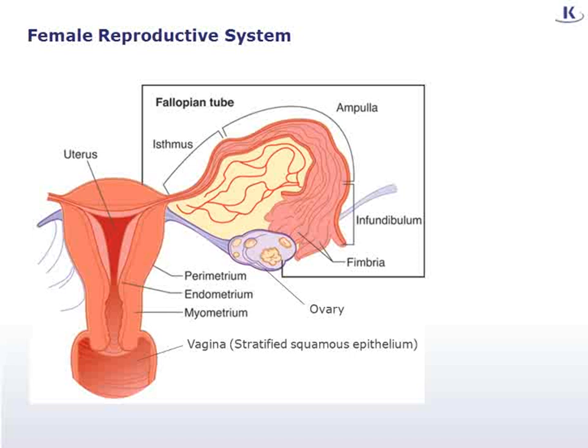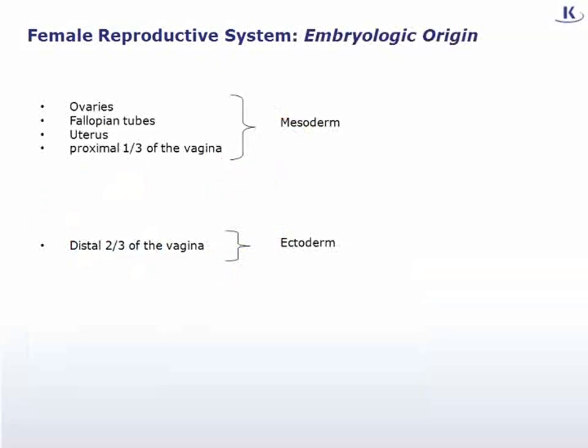The uterine wall is composed of three layers: the endometrium, which forms the lining of the uterus; the myometrium, formed by smooth muscle; and the perimetrium, which is the peritoneal layer of the broad ligament. As follicles mature, hormonal effects on the endometrium prepare it to potentially receive the product of fertilization. The vagina is lined by stratified squamous epithelium rich in glycogen. The ovaries, fallopian tubes, uterus, and proximal one-third of the vagina are embryologically derived from the mesoderm, with the distal two-thirds of the vagina derived from the ectoderm.